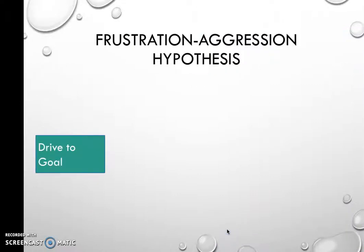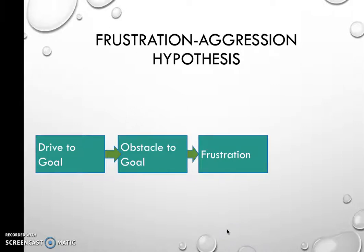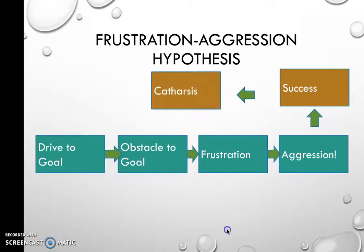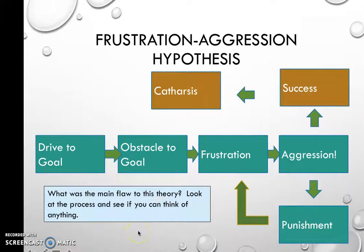To walk through the theory: you have a drive towards a particular goal, then some kind of obstacle — an opponent's decision, something like that — which causes frustration. And directly from that frustration, according to this theory, you will be aggressive. The two pathways after that are either success, leading to catharsis, or punishment, leading to more frustration building up. So what's the flaw in this theory? Pause the screencast and see if you can work it out.